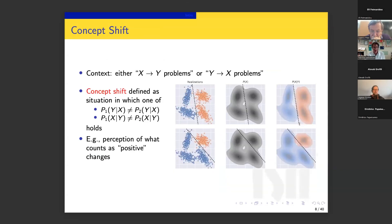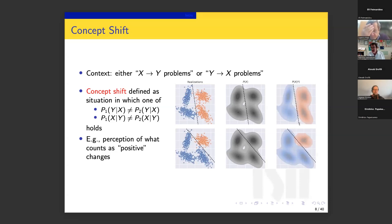Concept shift is the third type. It may affect either x-implies-y or y-implies-x problems. It is defined as a situation in which the causal relationship between covariates and labels changes — P(Y|X) or P(X|Y) changes. One example is product reviews: if previously we considered positive anything marked three stars or more, but then change to requiring four stars or more, the very concept of what counts as positive has changed — that is concept shift.